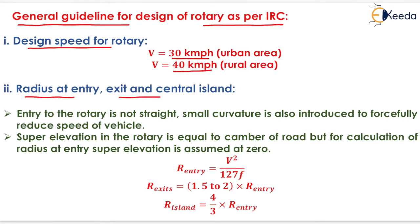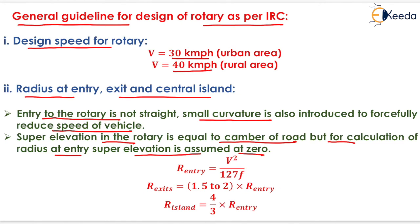General design guidelines for a rotary as per Indian Road Congress (IRC): Design speed is 30 km/h for urban areas and 40 km/h for rural areas. Entry to a rotary is not straight — a small curvature is introduced to forcibly reduce vehicle speed. Super elevation in the rotary equals the camber of the road, but for calculating the radius at entry, super elevation is assumed as 0. Radius at entry = v²/(127f), radius at exit = 1.52 × radius at entry, and radius of island = (4/3) × radius at entry.